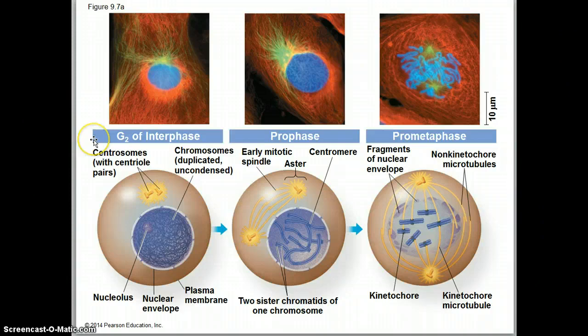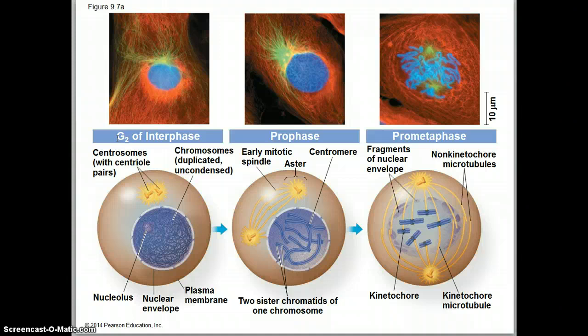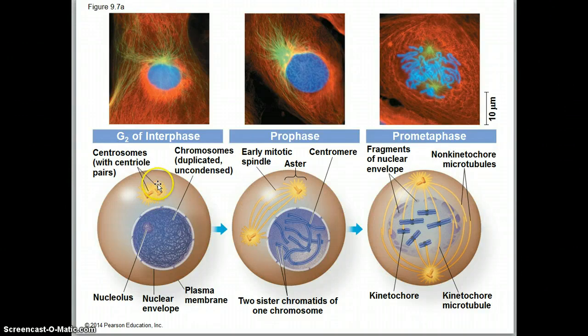During G2, the last gap phase of interphase, the cell is growing and doing all the things that cells do. It hits the end of G2 and reaches a checkpoint — we're going to be talking about these checkpoints a lot later. The cell hits the checkpoint and, if okay to proceed, it will move into the mitotic phase. The centrosomes have to be replicated and ready to go, all of the DNA has to be replicated as well, and then passing the checkpoint, the cell can enter prophase.